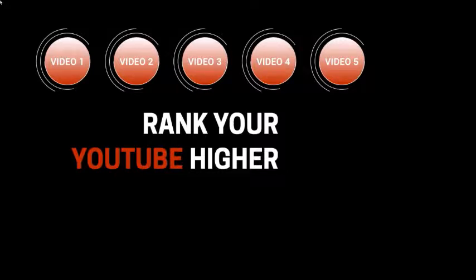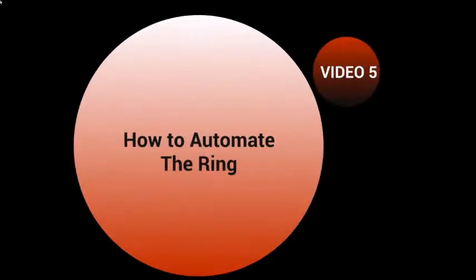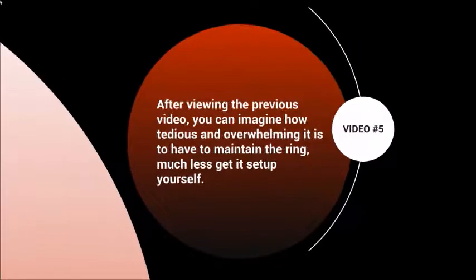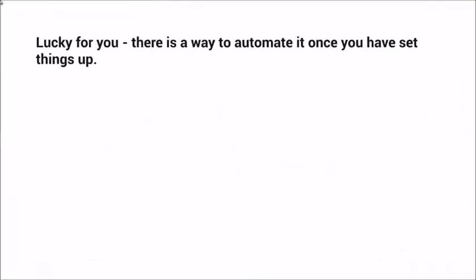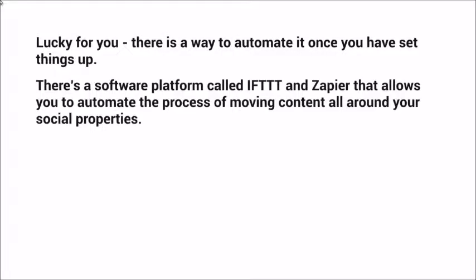Hello and welcome back. This is video number five and we're going to talk about how to automate the ring. After viewing the previous video you can imagine how tedious and overwhelming it is to maintain the ring, much less get it set up yourself. There is a software platform called IFTTT and another called Zapier.com that allows you to automate the process of moving content around your social properties.